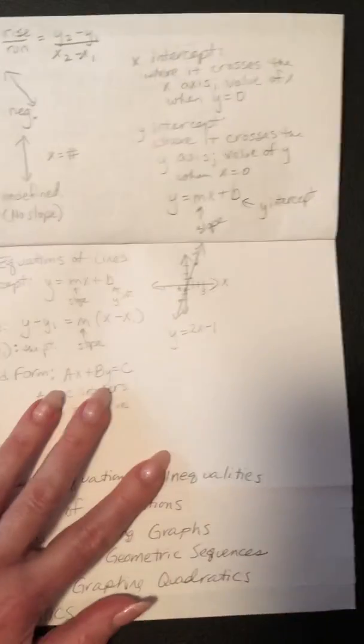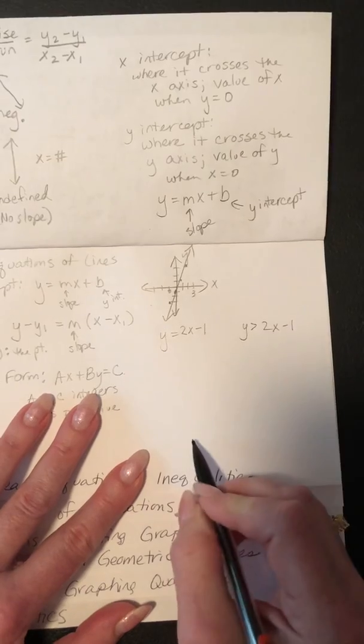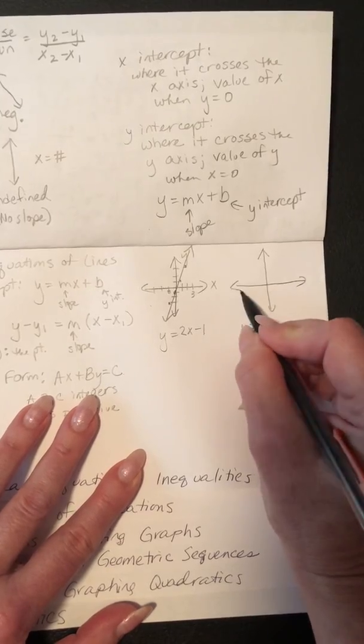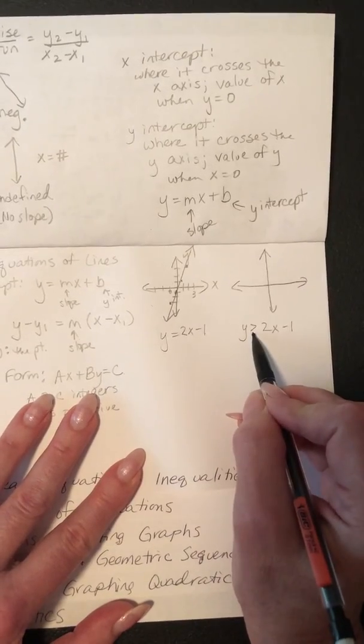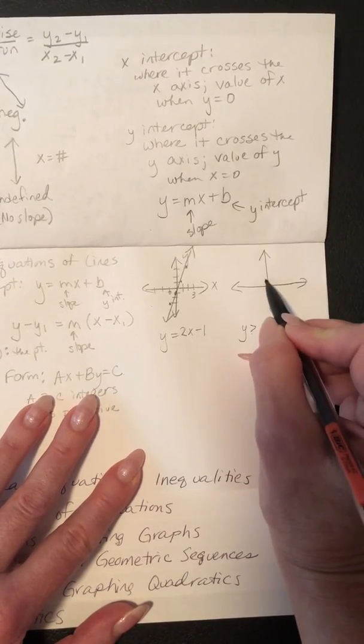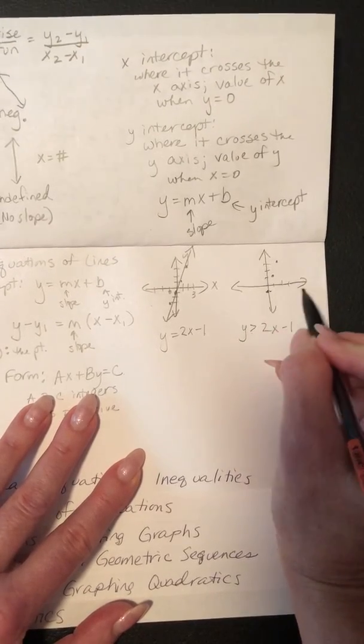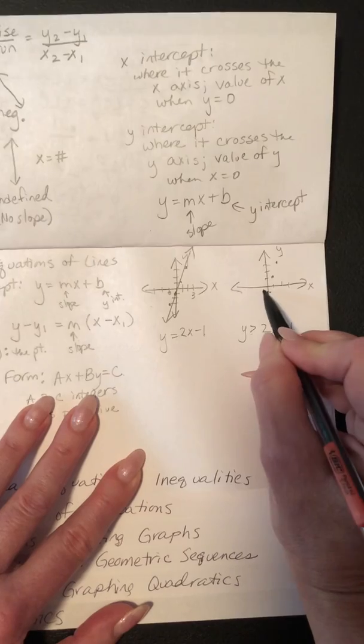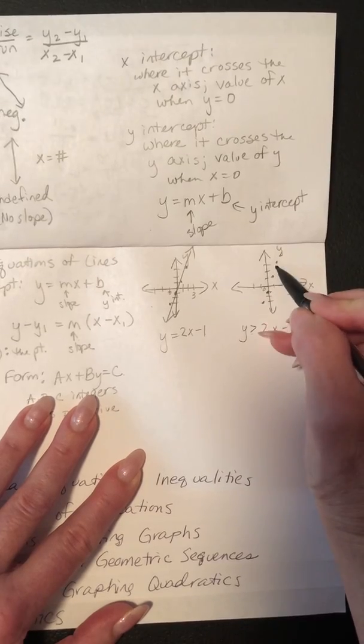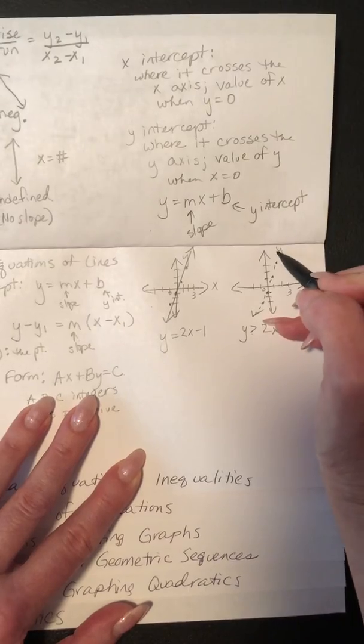Now, what if it had said the exact same thing, but it said y is greater than 2x minus 1? So, you would still draw that boundary line. But since it's greater than, and there's no equal sign underneath that, then it's a dashed boundary line. So, it still crosses at negative 1. It still has slope of 2. But when you do it, you put a dashed line, because the boundary line is not included.